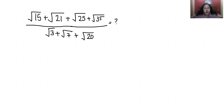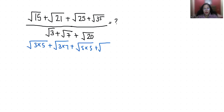So √15 I can write as √(3×5). Similarly √21 as √(3×7), √25 as √(5×5), and √35 as √(7×5). And √20 in the denominator is 2√5.